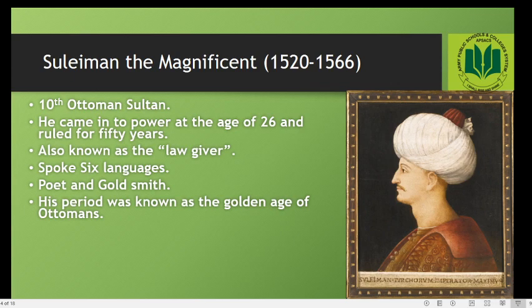Let's talk about some famous conquests of Suleiman. The first is the conquest of Belgrade. Belgrade is a modern part of Serbia, and at the time it was a fortified city on the Danube River — the second largest river of Europe — under the leadership of the King of Hungary. Suleiman attacked Belgrade with his army and conquered it.